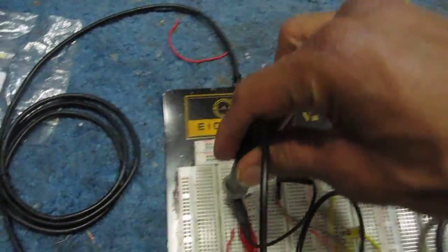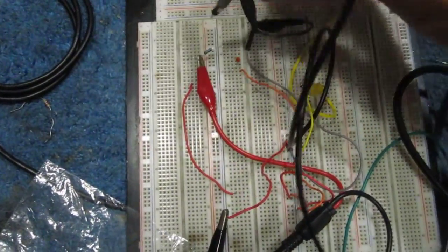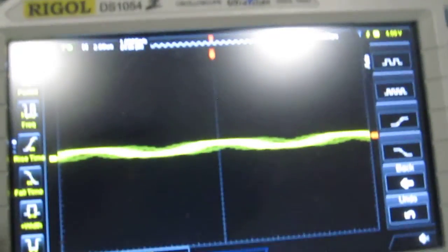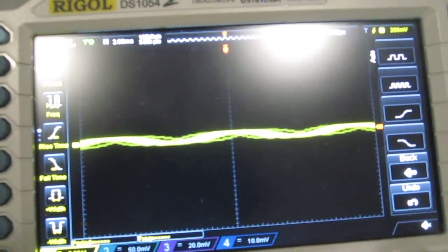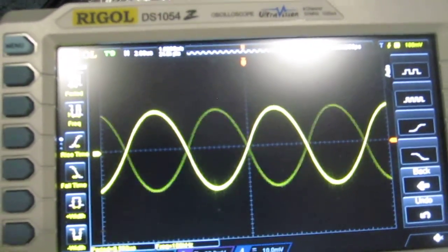Now if I move the oscilloscope probe to the output and adjust the waveform, you see a sine wave at the output.